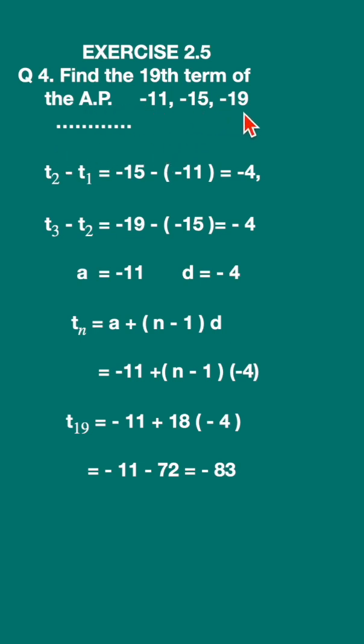This is the AP, arithmetic progression. We are asked to find the 19th term. First let us write down the general formula for nth term. For that we need the first term and the common difference. First term is called a and the common difference is called d.